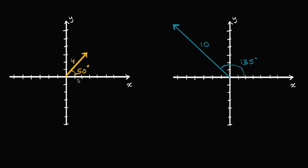It's really just going to involve a little bit of trigonometry. We want to break this vector down into its horizontal and its vertical components, or its x and y components. So I could draw its horizontal component like this, and then its vertical component is going to look something like this. And notice, if you add the horizontal component and the vertical component, you are going to get your original vector.